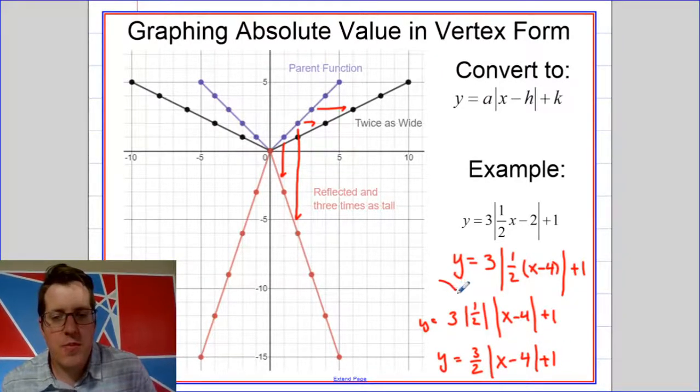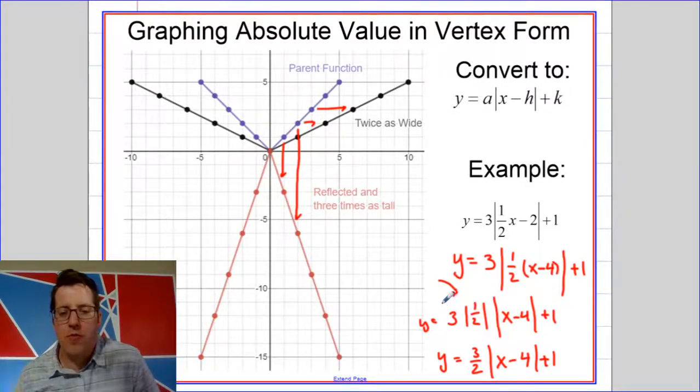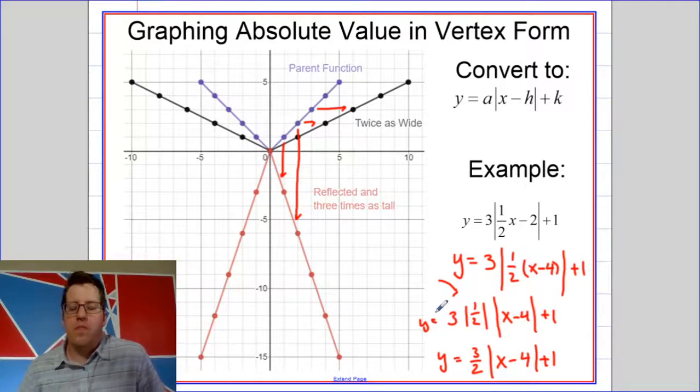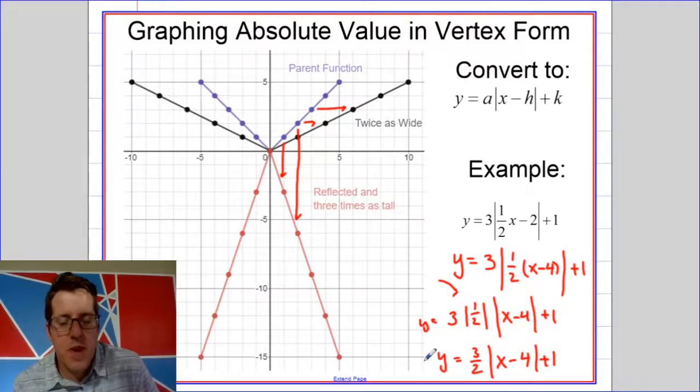The reason I included the absolute value here is because if this had been negative one half, for example, we would have still pulled it out as a positive one half because of the absolute value.